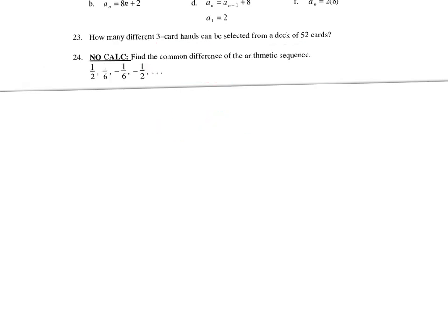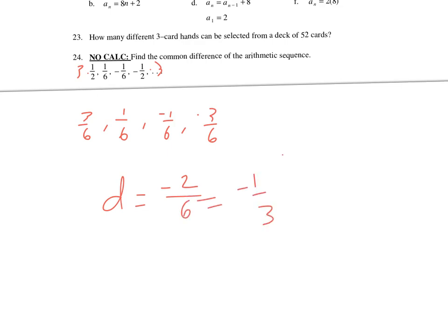Next, find the common difference. I'll give everything the same denominator by multiplying some terms by 3: 3 over 6, 1 over 6, negative 1 over 6, negative 3 over 6. The common difference is down 2 in the numerator with denominator 6, so the common difference is negative 1 third.